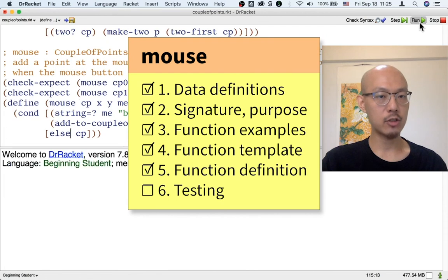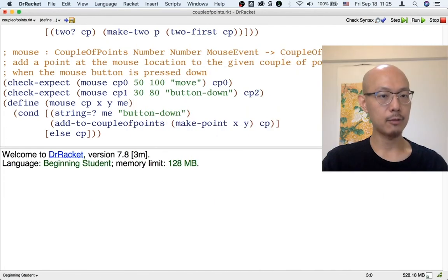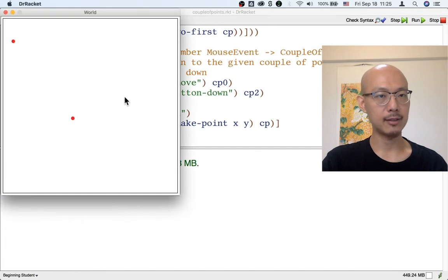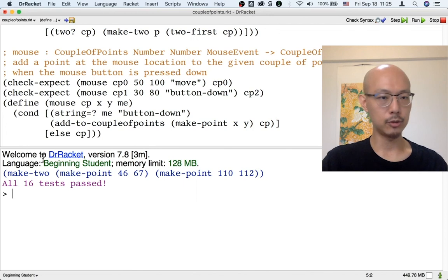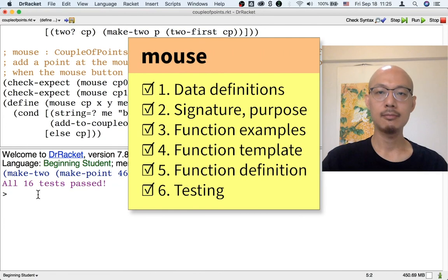Whenever we change the program, we should test things again. Not just by fooling around with the Big Bang, but also using automated testing. Alright, enjoy extending this Big Bang animation to three points.